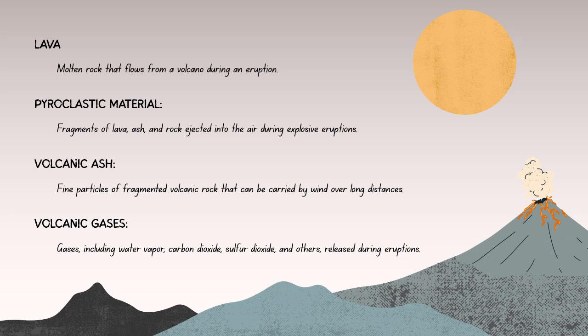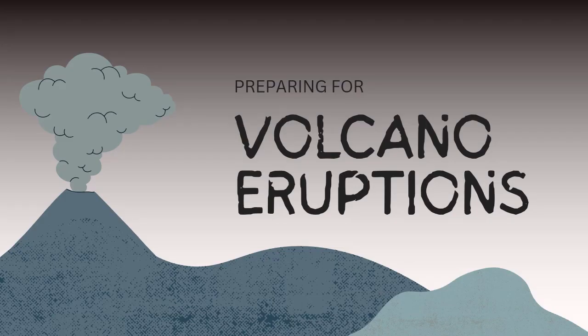Pumice is a lightweight volcanic rock that forms when frothy lava solidifies quickly; it often floats on water. Volcanic gases include water vapor, carbon dioxide, sulfur dioxide, and other gases released from magma. These gases can contribute to air pollution and have effects on climate.